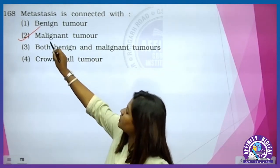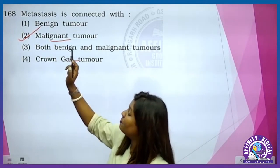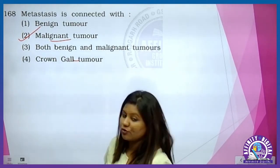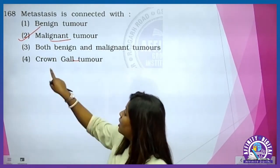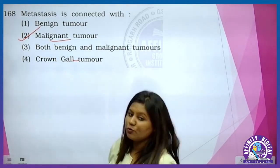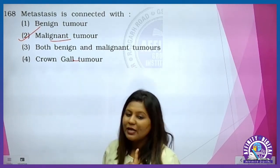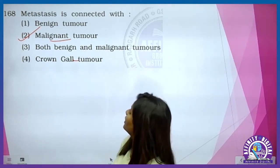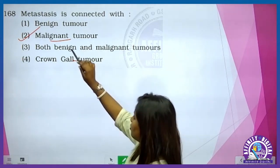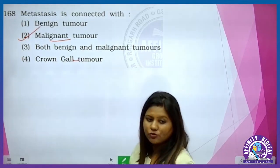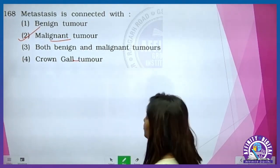Metastasis is associated with malignant tumors, kyunki benign tumor jo hai wohi ki jagah mein rehta hai. Crown gall tumor is associated with agrobacterium — plant mein jo hota hai. So metastasis is associated only with the malignant one.